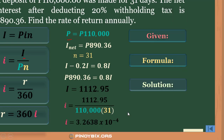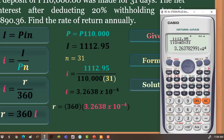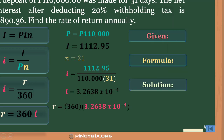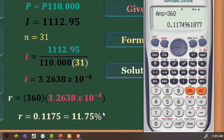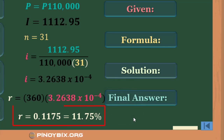Next, we have I, so we proceed to get R, the rate of return annually. Using the formula, we multiply by 360. So 3.2638 × 10⁻⁴ times 360 gives us 0.1175, which is equivalent to 11.75%. This is our final answer.